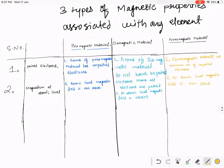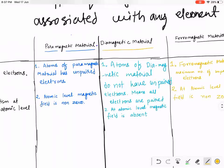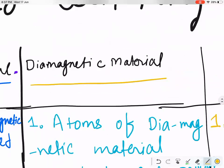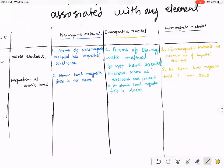Everyone got the answer? Any doubts? So at the atomic level, the magnetic field is absent in which substance? The substance in which all electrons are paired and there are no unpaired electrons — that is diamagnetic material. Now let's read the other properties of these materials.